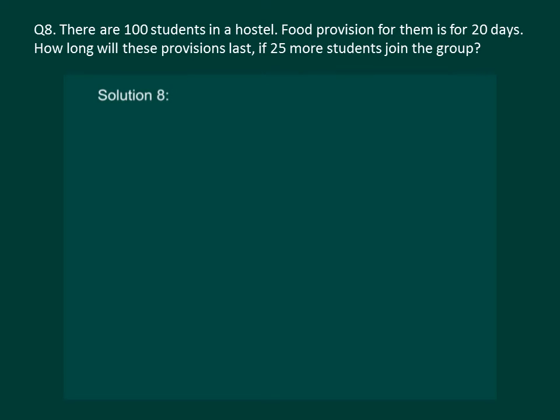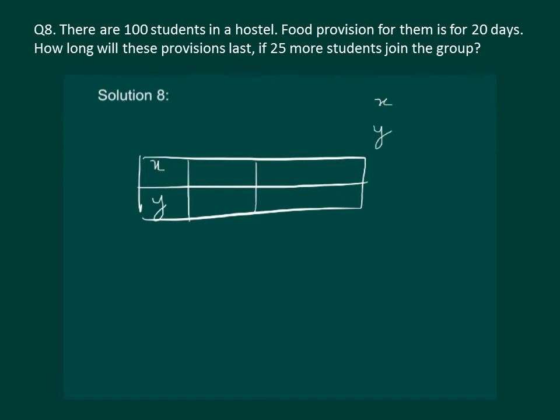Let us denote number of students by x and number of days that provision last by y and try and construct a table between number of students and number of days the provision can last. We are already given that when number of students is 100 it can last for 20 days.